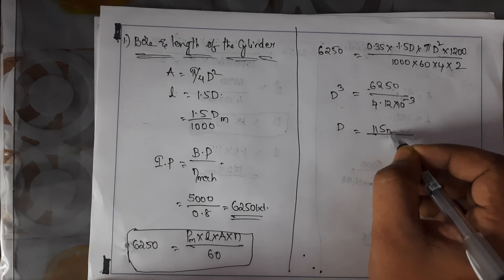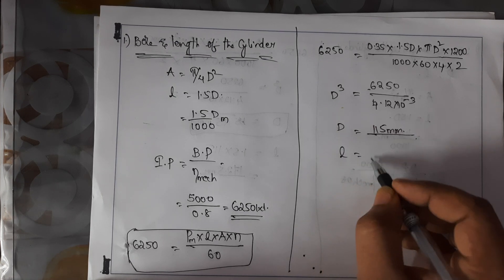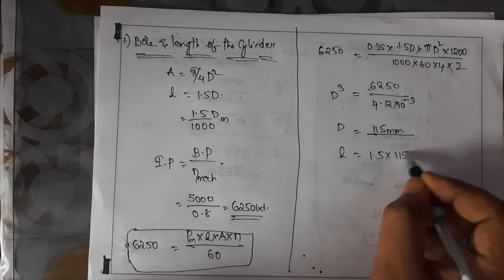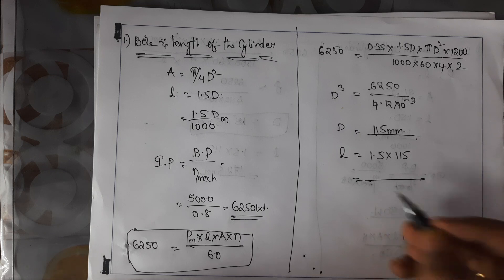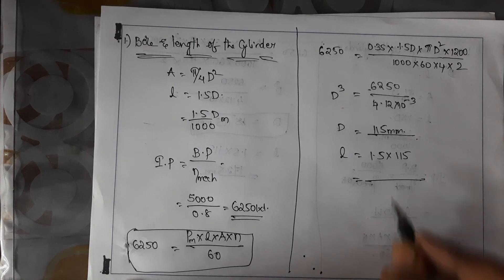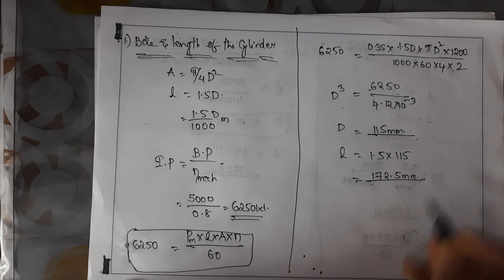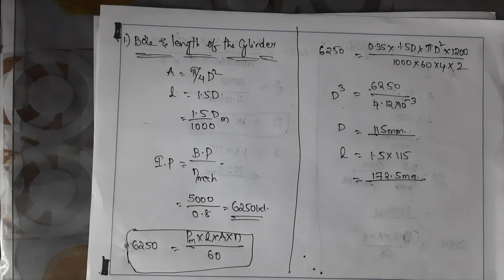The answer obtained is D = 115 mm. The length value is 1.5 × 115, so L = 172.5 mm. The bore and length of the cylinder are now determined.